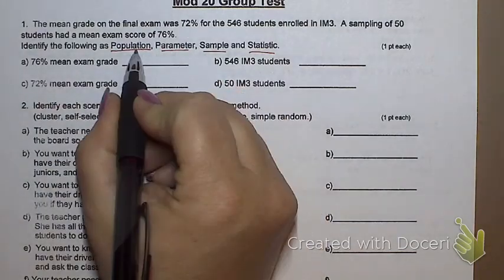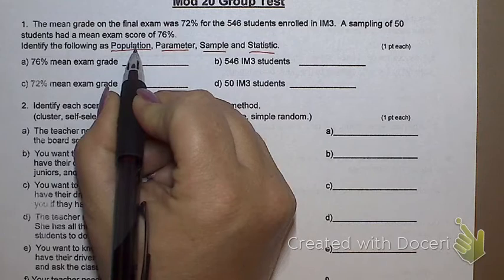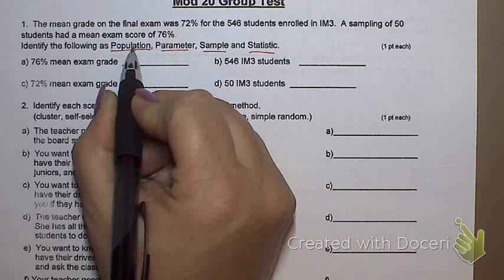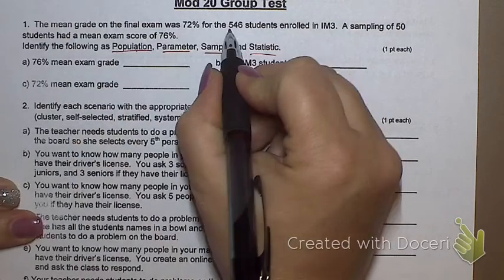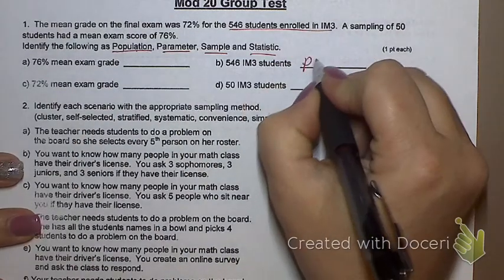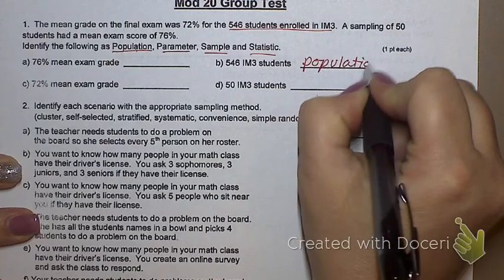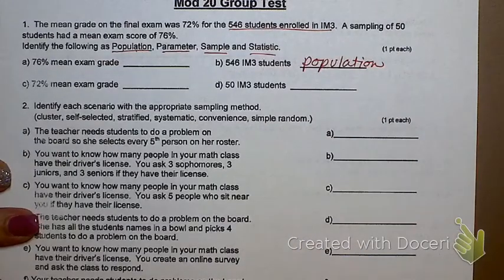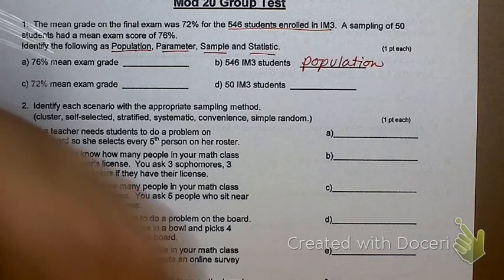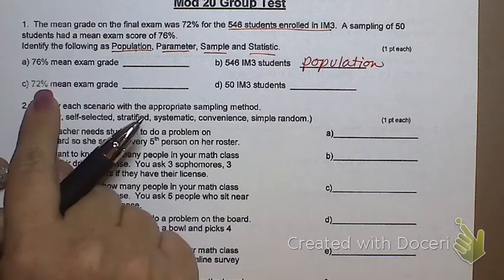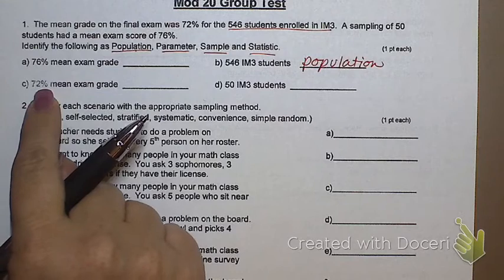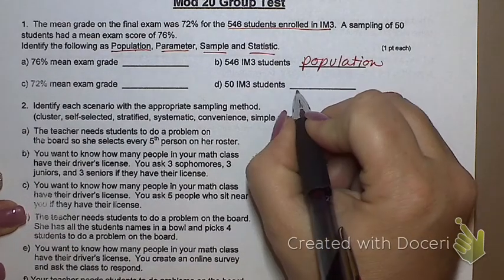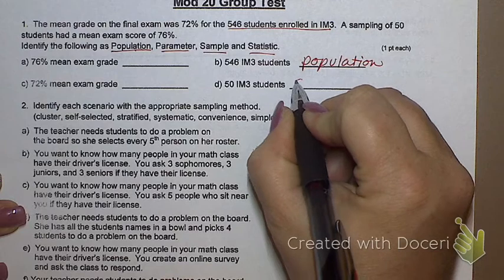What is the easiest thing to identify first? Population. Population is the biggest group listed. What is the population here? Right there. There's my population. What is my sample? Can my sample be a percent? No, because my sample is the number of people that I'm interviewing or the number of items that I'm testing. So this is my only other option for my sample.